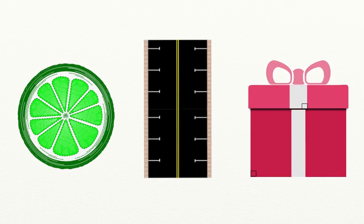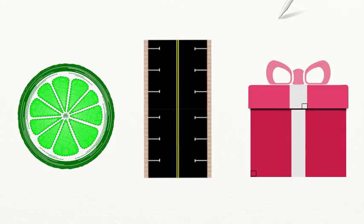Let's look at another example together to see how you can use these in the real world. We have three images on the screen, each representing parallel, perpendicular, and intersecting lines. It's important to remember that lines are everywhere, so you're going to see multiple types of lines in each image, and that's okay.